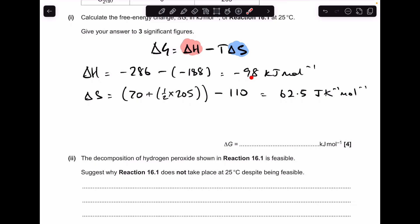So the ΔH is coming out at -98 kilojoules per mole. And the ΔS is coming out at 62.5 joules per kelvin per mole. So because we need our final answer in kilojoules per mole, we need to change this into kilojoules per kelvin per mole before we put it into the calculation.